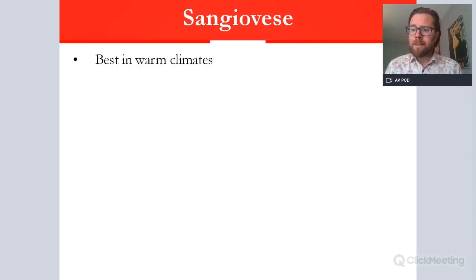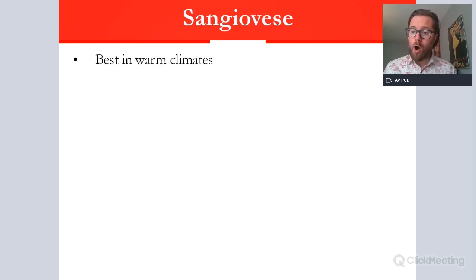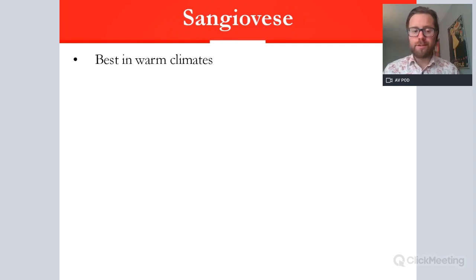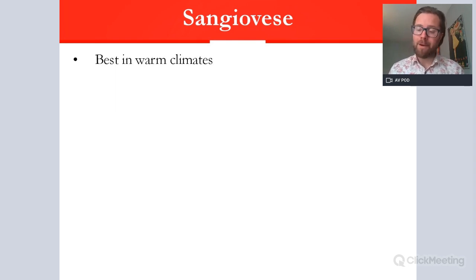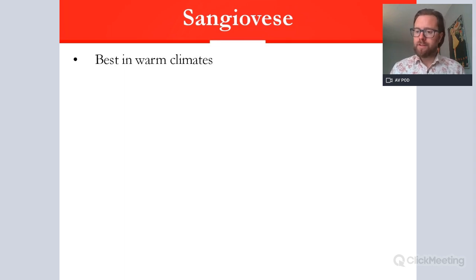Sangiovese in this intermediate look is a very basic look at the variety, of course at home in Italy where it is found in the warmer sites. We'll find it in warm zones — Mediterranean and continental parts — but mainly Mediterranean, down around Tuscany for instance, Umbria, those kind of central parts of Italy which it's famous for.